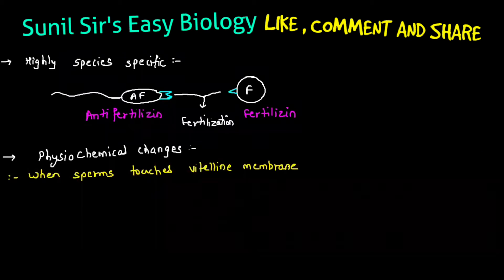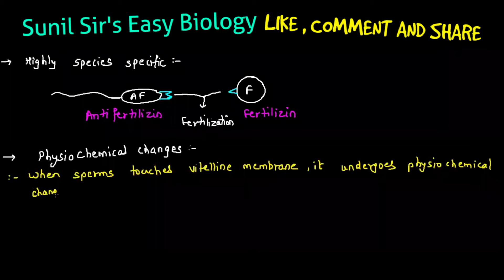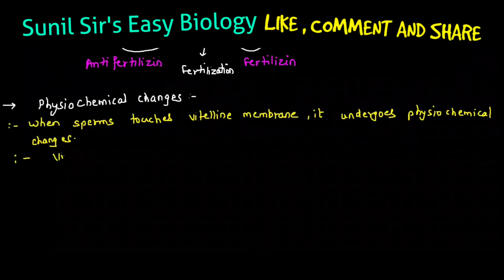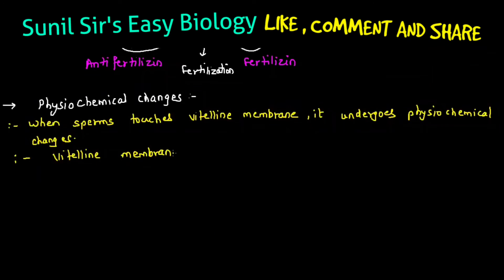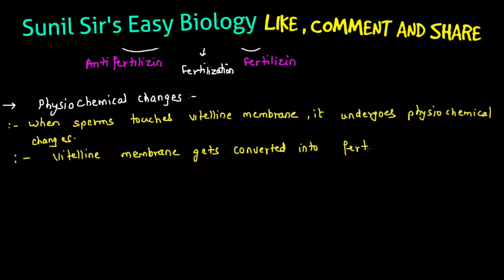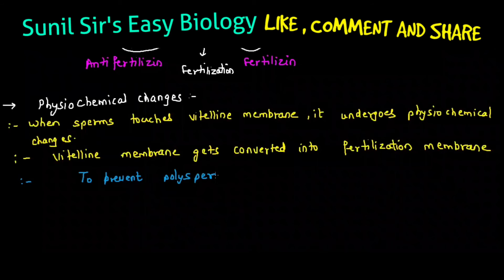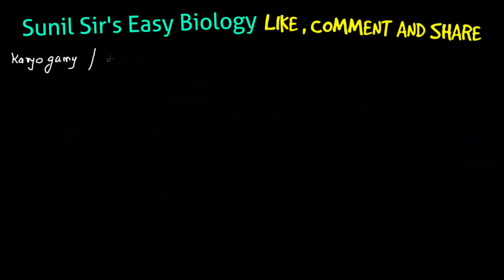At one time, only one sperm can fertilize the egg. The moment the sperm touches the vitelline membrane — which is the outer cytoplasmic layer of the egg — physiochemical changes take place. Because of those physiochemical changes, it produces an anti-fertilization membrane. And because of this membrane, only one sperm is going to enter. The vitelline membrane gets converted into the fertilization membrane to prevent polyspermy.